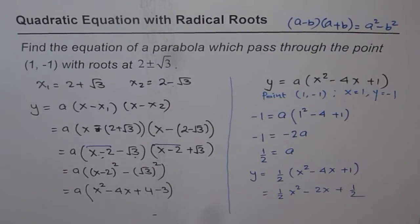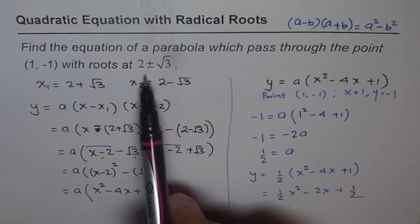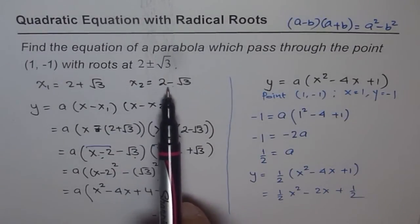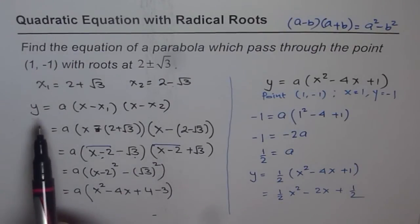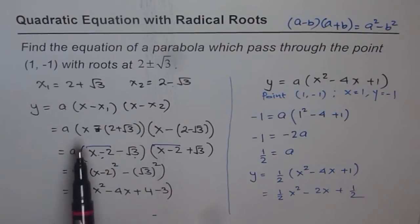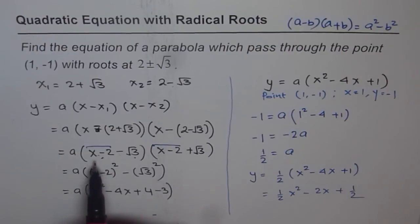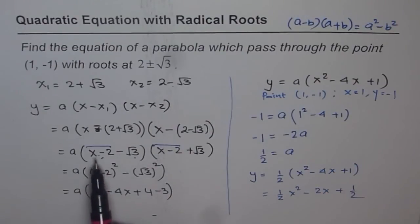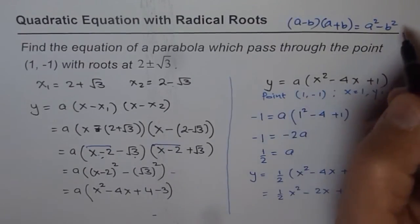Let's recap the steps. We were given two roots: 2 plus square root 3 and 2 minus square root 3, and the parabola passes through the point (1, -1). Since the two roots are given, we wrote the equation in factored form: a times (x minus first root)(x minus second root). The important technique was using the difference of squares — multiplying a difference by a sum gives a squared minus b squared — which saved a lot of time.